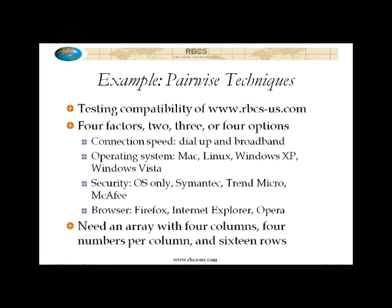So you see there are four factors: connection speed, operating system, security, and browser — so we need four columns. Operating system and security each have four options, so we need four numbers per column. And four times four is 16, so we would have to have at least 16 rows.